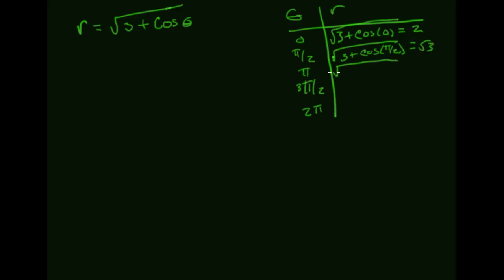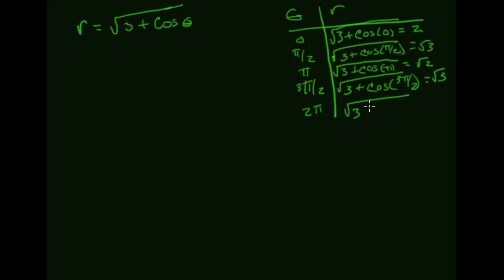Pi gets me the square root of three plus the cosine of pi, which works out as the square root of two. Three pi over two gives me back the square root of three. And two pi is going to be three plus cosine of two pi, which is the square root of four, which is two.